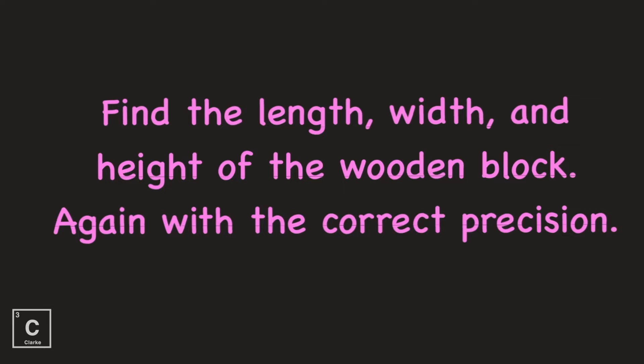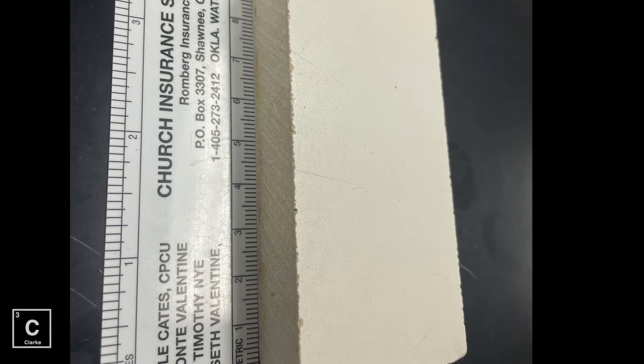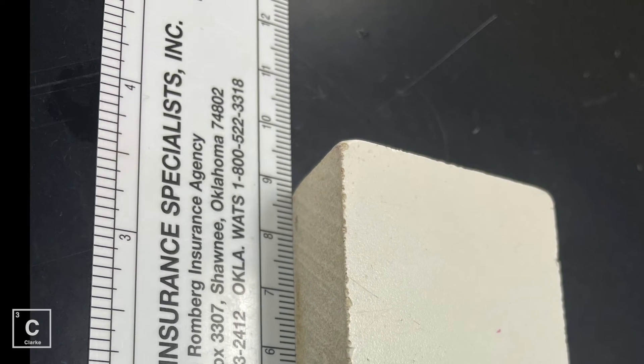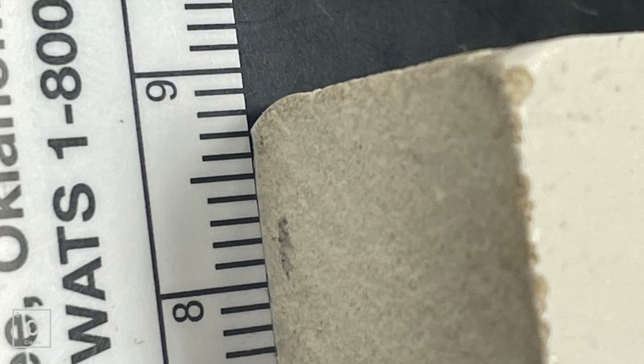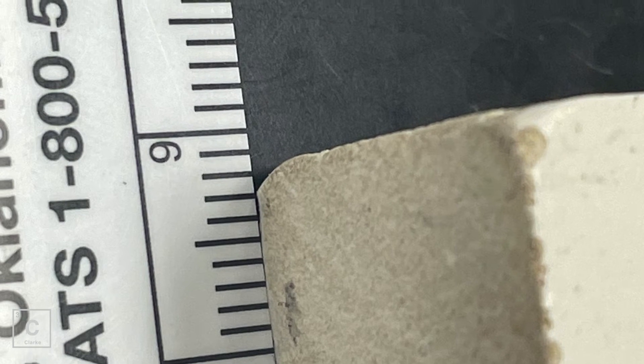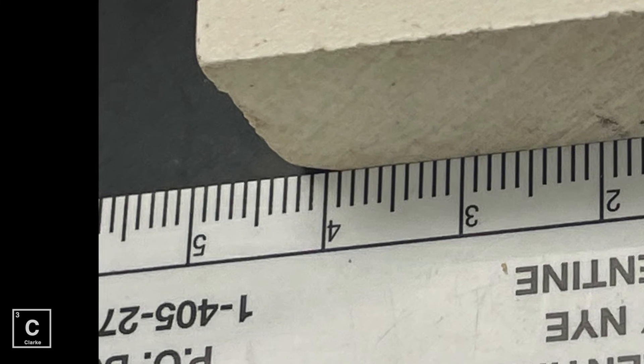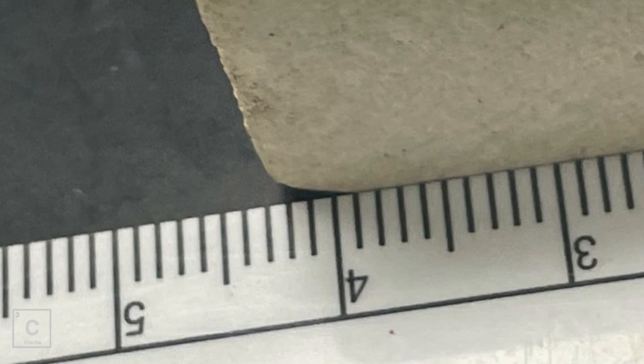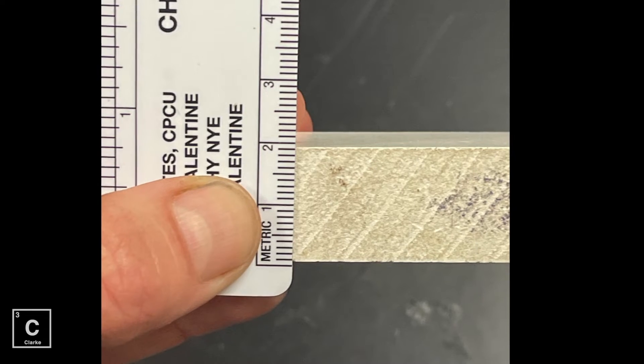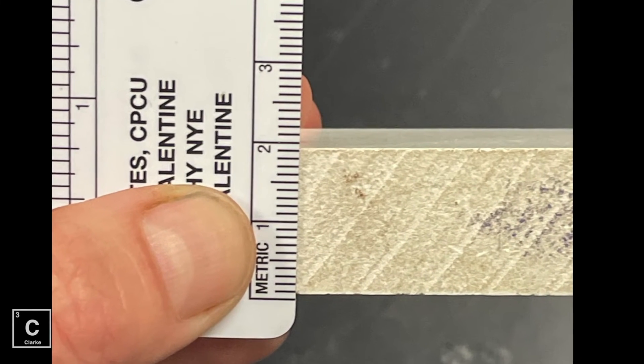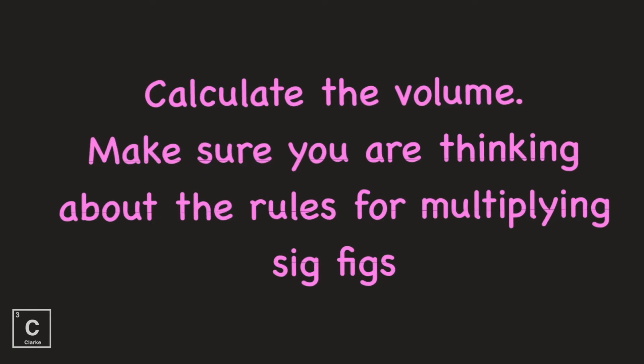Also, make sure you're realizing we're using a metric ruler. Centimeters. Science uses metric. Don't forget! Calculate the volume. Make sure you're thinking about the rules for multiplying sig figs. Okay, now we're going to move on to a marble.